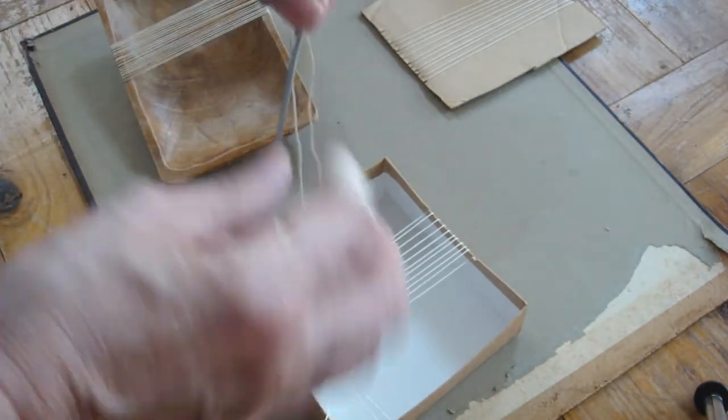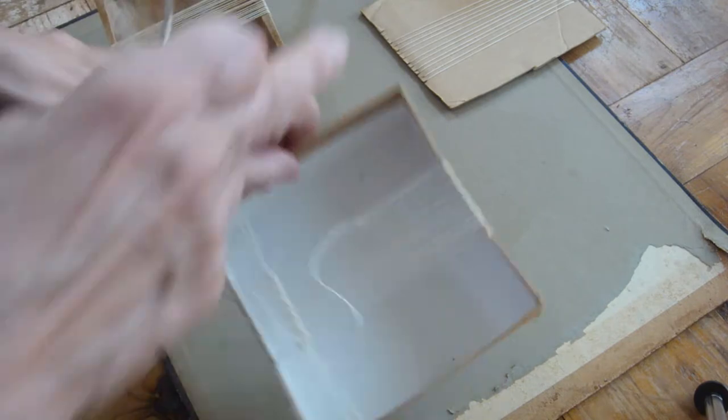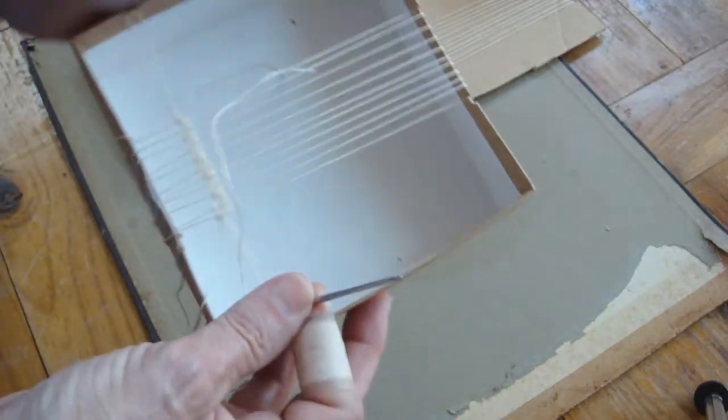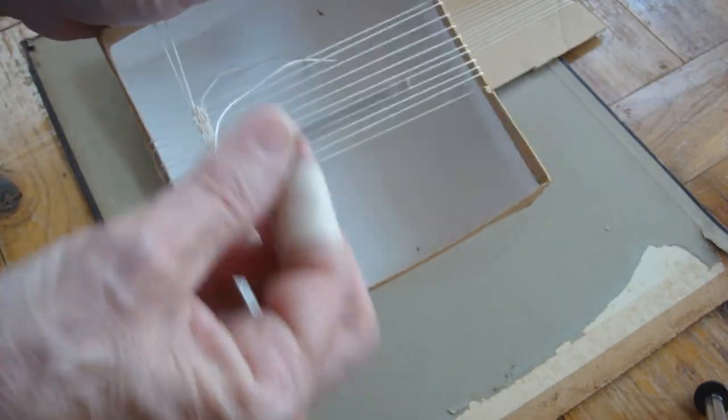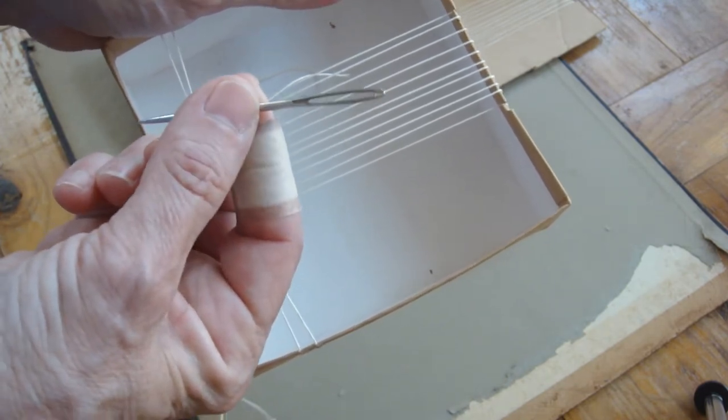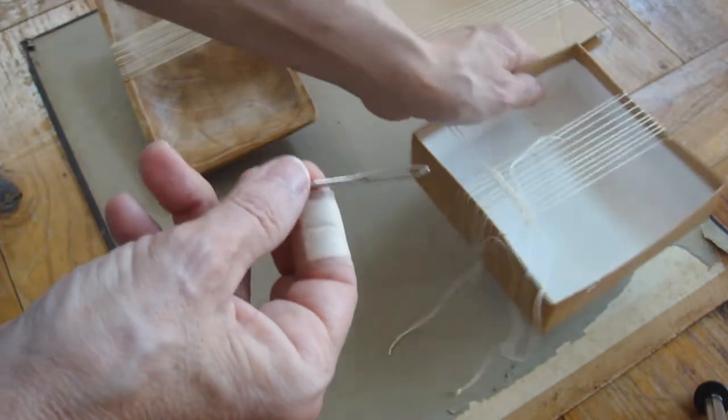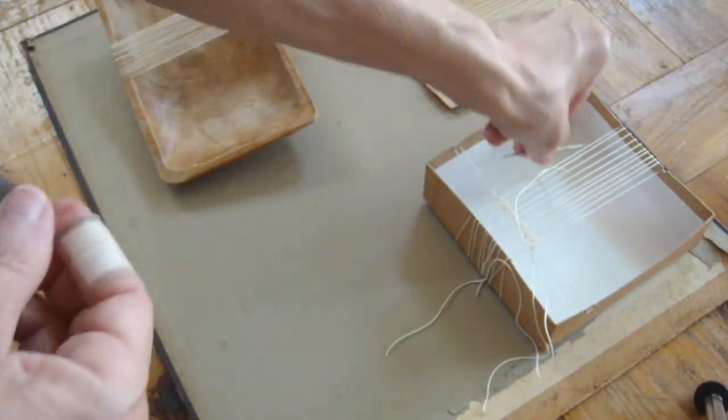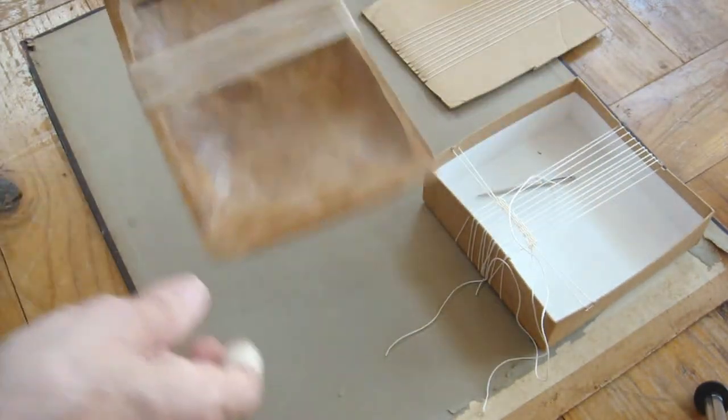And then the other thing you'll need besides some kind of support and thread is a tapestry needle, which is one of these really large eye needles. It handles just about any kind of thread. You can also use your fingers, but the needle comes in handy.